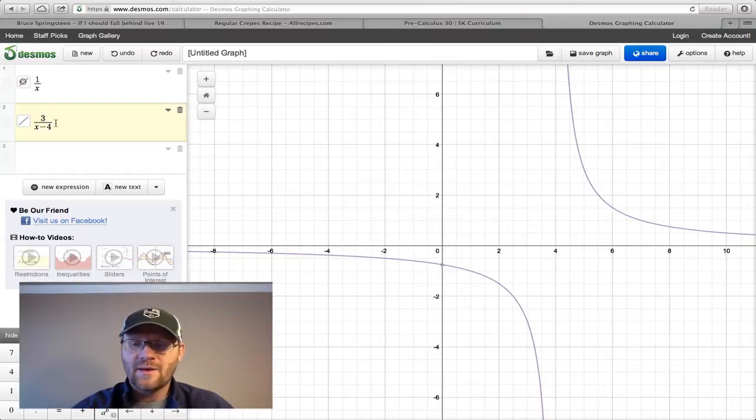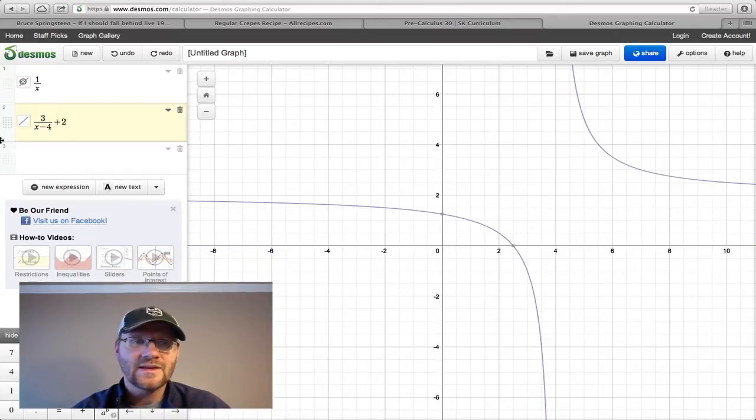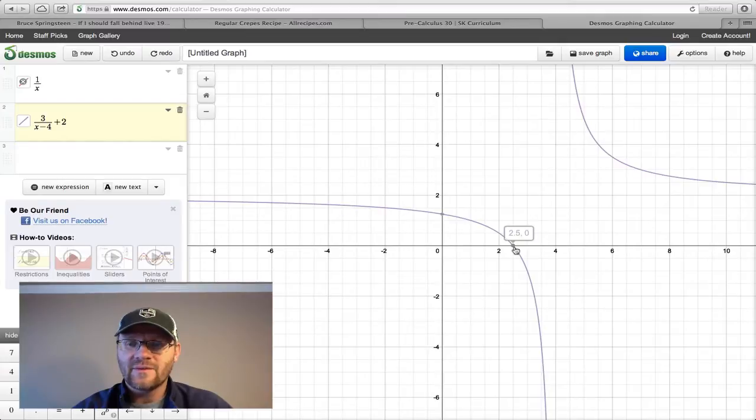And say I wanted to add a number onto the end of this, so we'll say a 2. If I added a 2 onto that, that has now changed our vertical asymptote. Oh, no, vertical asymptote is still the same. It's at 4. But our horizontal asymptote is now at 2. So we also now have an x-intercept here. We'll talk about how to find that x-intercept in a second, and we do have a y-intercept as well. We'll have to find those two things algebraically.